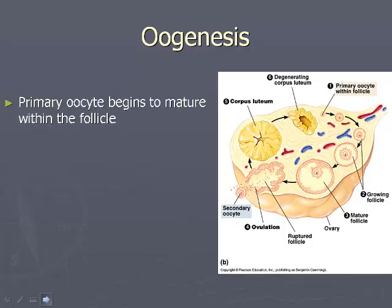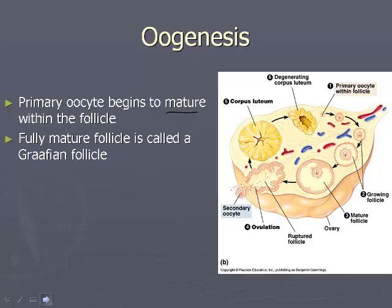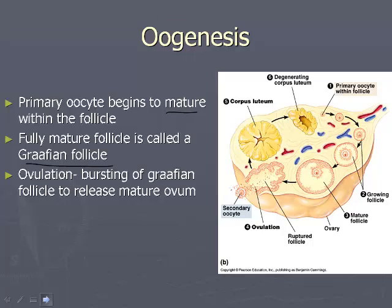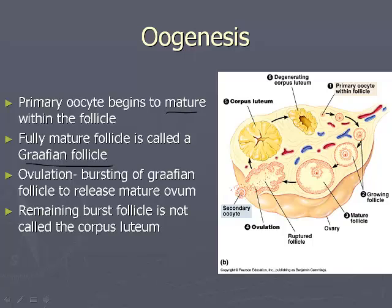Let's get into the details of the process. First, the primary oocyte begins to mature within the follicle. When we have a fully mature follicle, it's called a Graafian follicle. Ovulation is the bursting of that Graafian follicle to release the mature ovum. Finally, after ovulation, the leftover follicle has a specific name and job — it's called the corpus luteum, and it secretes hormones, which we'll cover when we talk about hormone regulation.